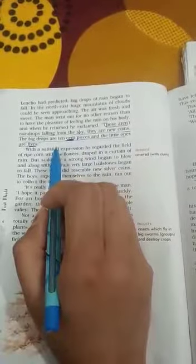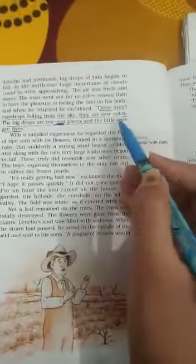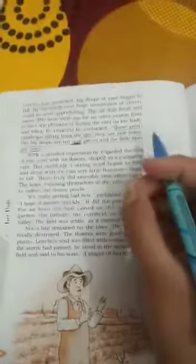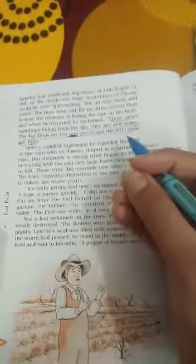So why is he telling these are coins? He calls the rain drop coins because the rain would bring a good harvest. And if it would bring a good harvest, then he would surely have a good amount of money.